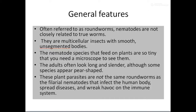Looking at the general features of nematodes: they are often referred to as roundworms, but they are not closely related to true ones. They are multicellular with a smooth, unsegmented body. Nematode species usually feed on plants and are so tiny that a microscope is needed to see them. Adults often look long and slender, although some species appear pear-shaped. These plant parasites are not the same as filarial nematodes that affect the human body.